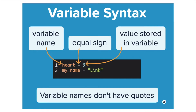In Python, a variable is written a certain way. This is an example of how a variable might be written. The first part in orange is the name of the variable. A variable is always equal to a certain value, so we add an equal sign. The value in this example is three, so 'heart' in this example has the value of three. A variable name does not have quotes — even though heart is a word or a string, it does not have quotes because it's the name of a variable.